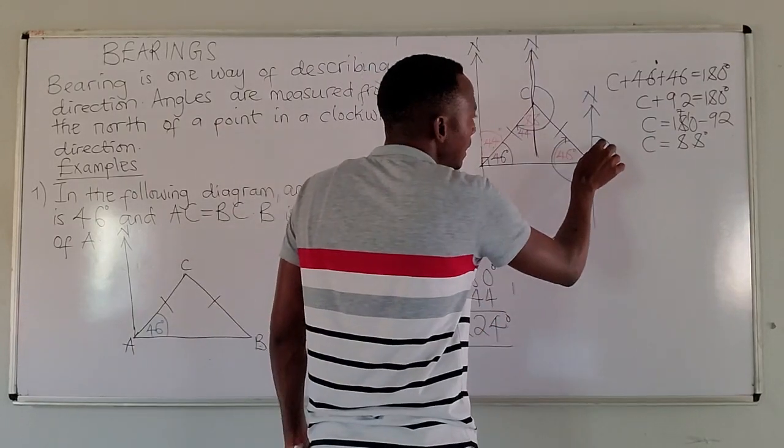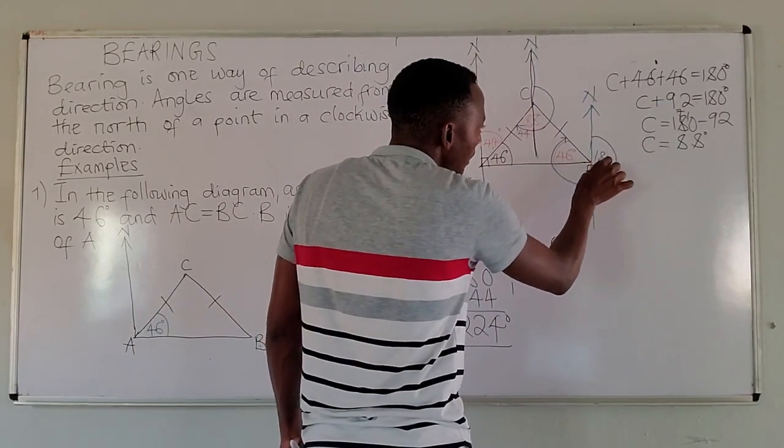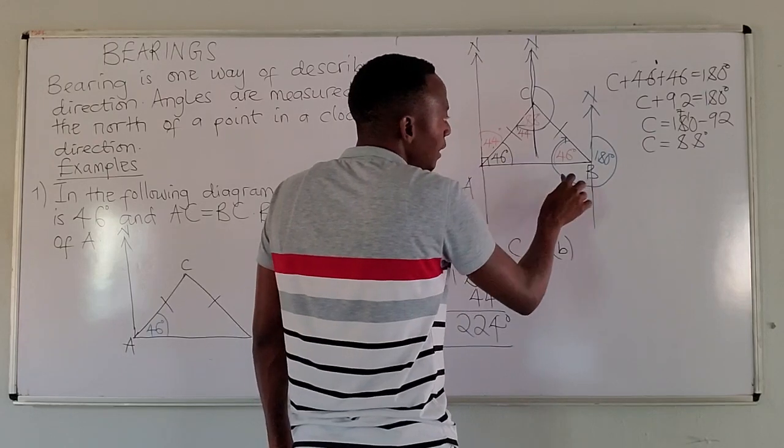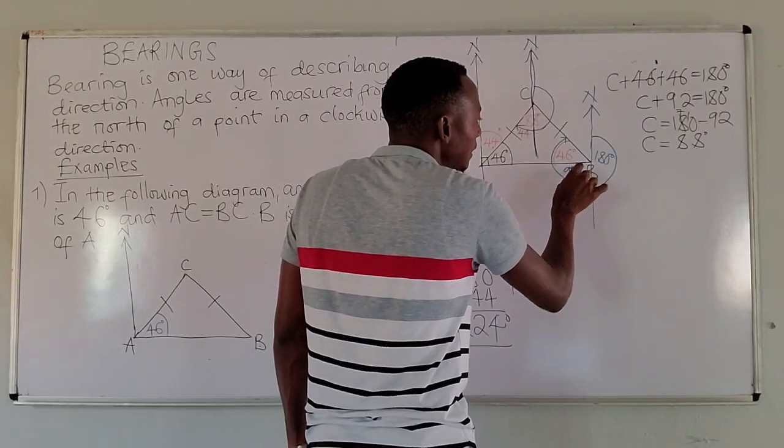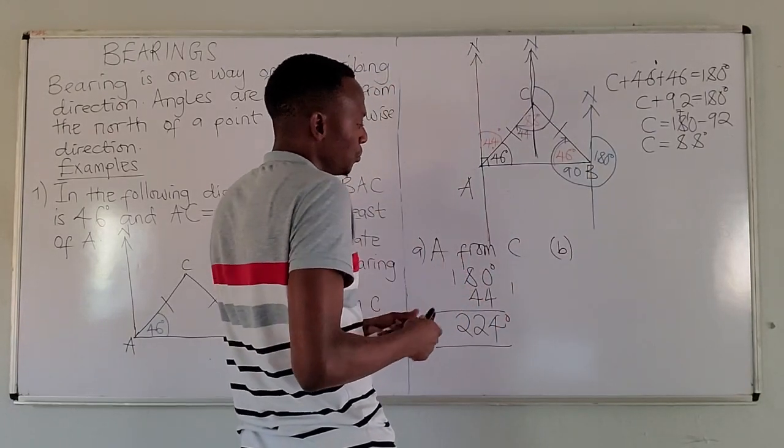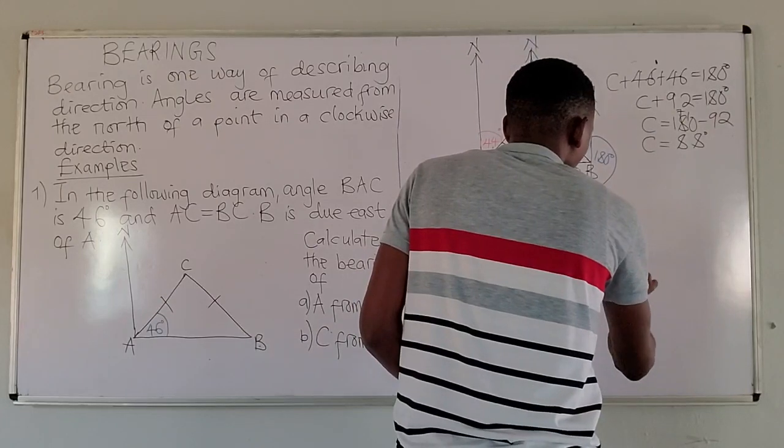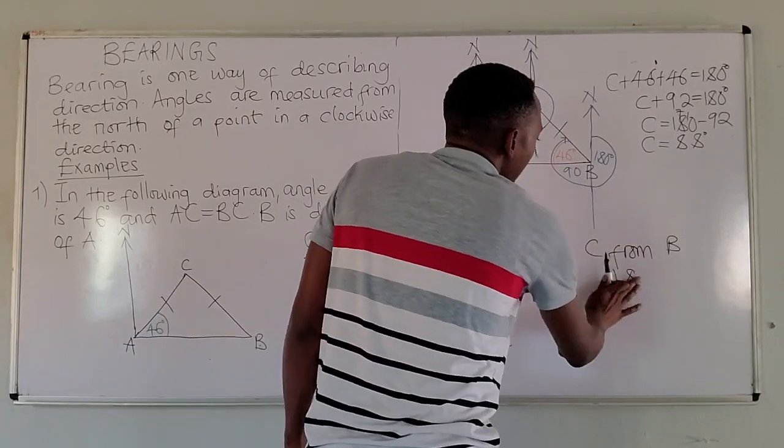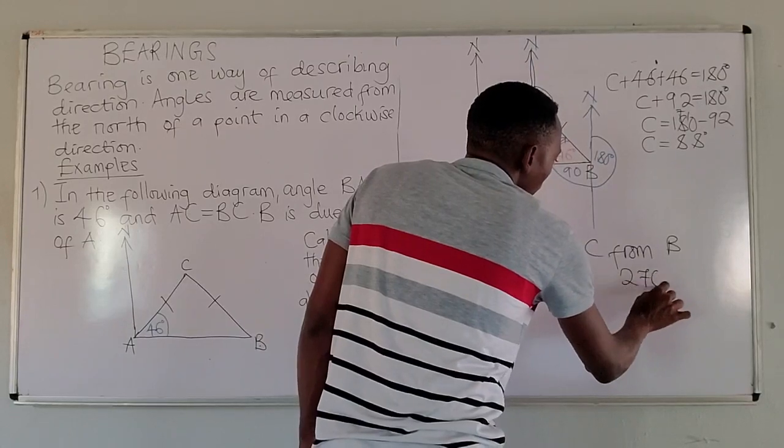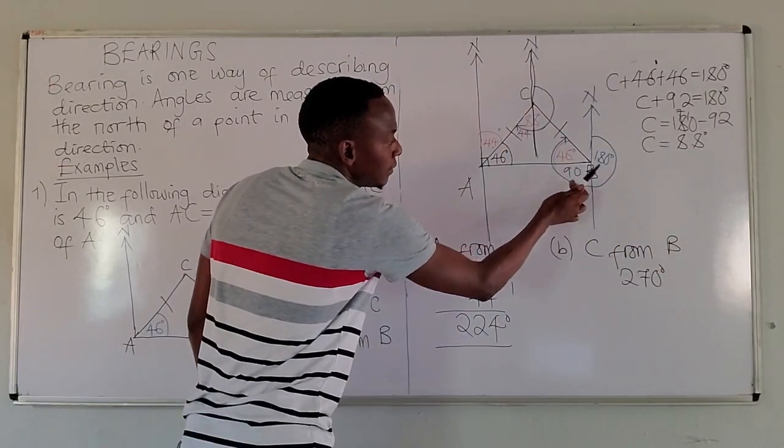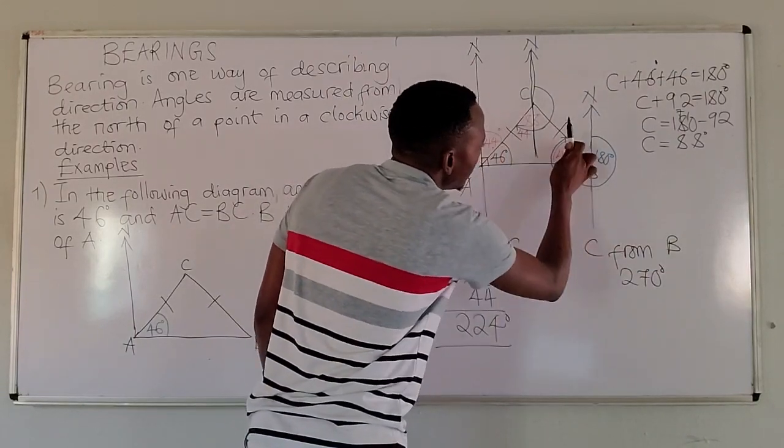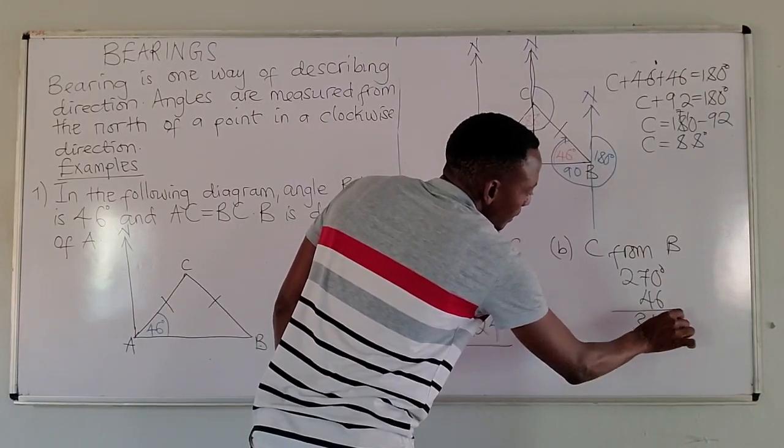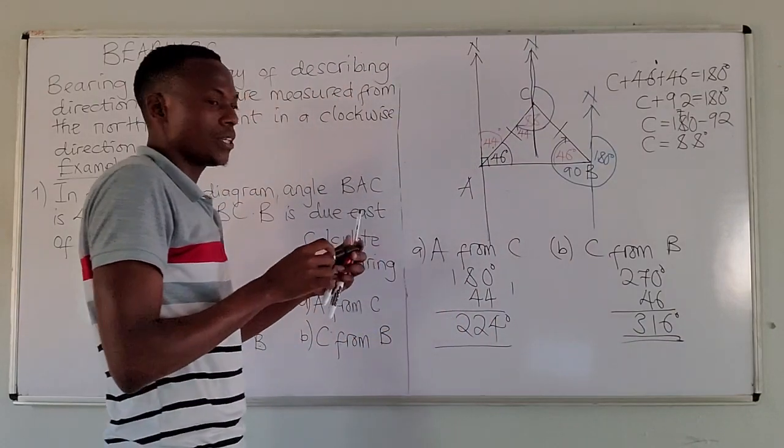We have to be mindful that this straight line is equivalent to 180 degrees. Because we have been told B is due east from A, this is equivalent to 90 degrees. C from B, we just add 180 plus 90 degrees, that's 270 degrees, plus this number which is 46. So 316. This would be the bearing of C from B.